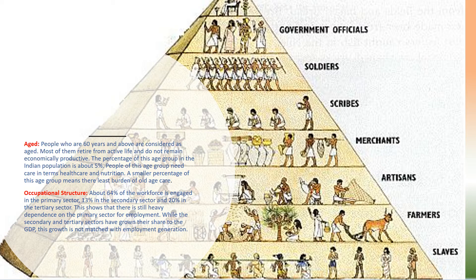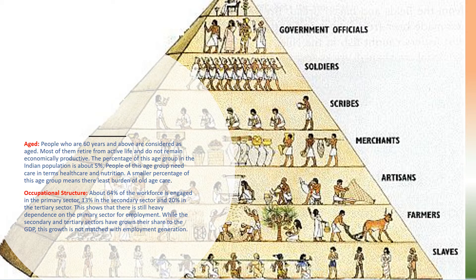Occupational structure: about 64% of the workforce is engaged in the primary sector, 13% in the secondary sector, and 20% in the tertiary sector. This shows that there is still heavy dependence on the primary sector for employment, while the secondary and tertiary sectors have grown their share to the GDP but this growth is not matched with employment generation.